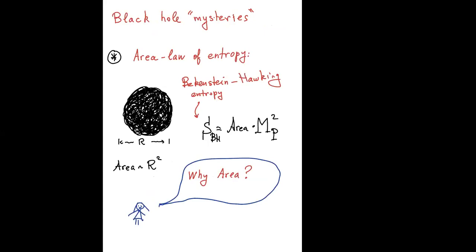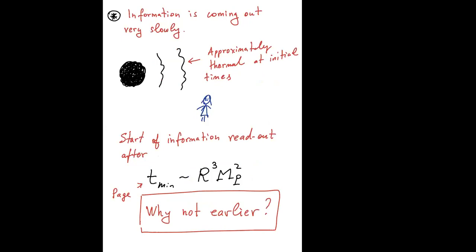For a long time, black holes have been considered mysterious because of the way they store and process quantum information. There are basically two main so-called mysteries of black holes on which everybody agrees. The first is the area entropy: black holes carry a huge entropy, largely compatible with unitarity, but it takes the form of the area — the Bekenstein-Hawking entropy in Planck units — and this is considered mysterious: why area?